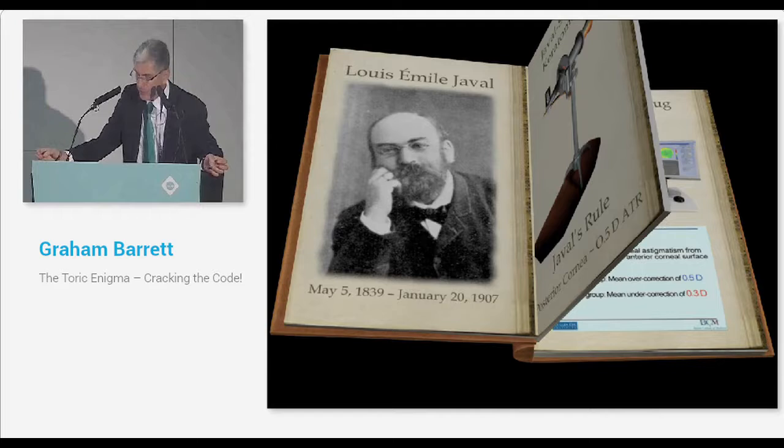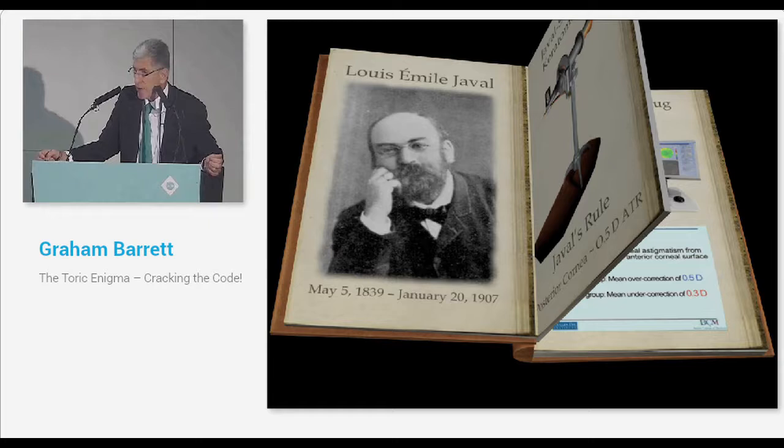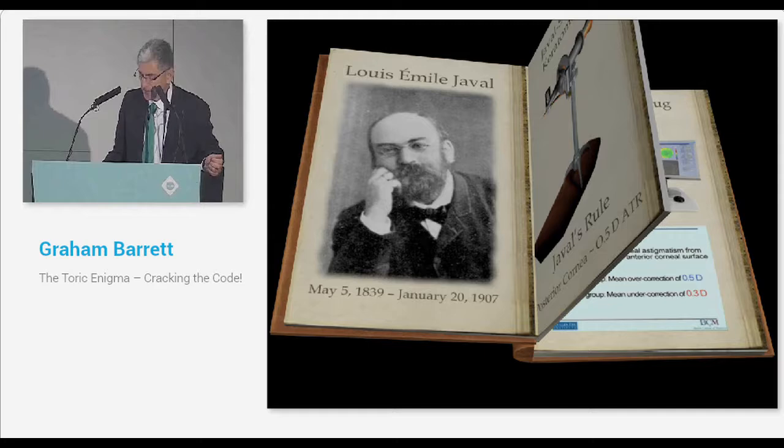The bottom line is this: if you ignore your posterior corneal astigmatism, with with-the-rule patients, you'll overcorrect them on average by half a diopter. And with against-the-rule patients, you'll actually undercorrect them by about 0.3 diopters. That's on average.